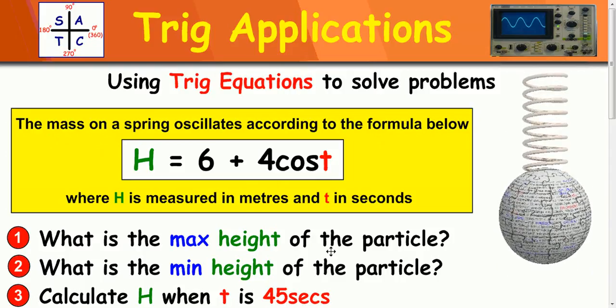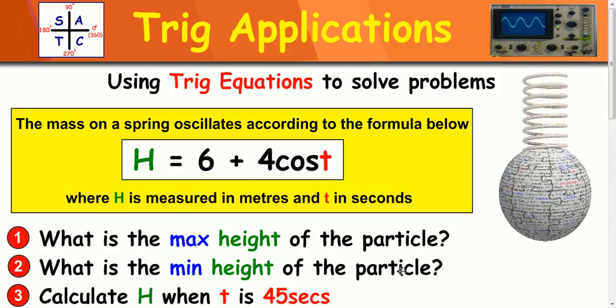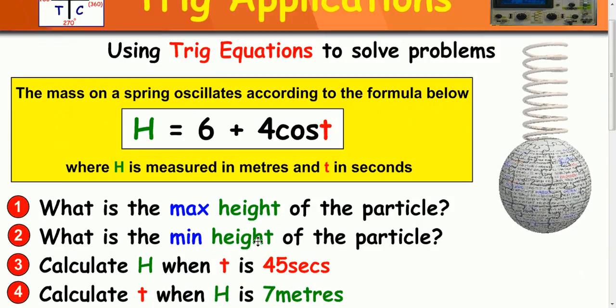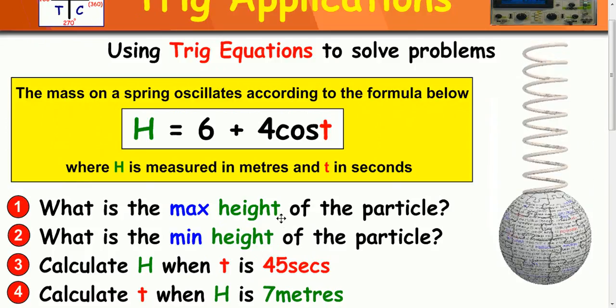What is the maximum height of the particle? What is the minimum height of the particle? Calculate h when t is 45 seconds and calculate t when h is 7 metres. So four different questions here.